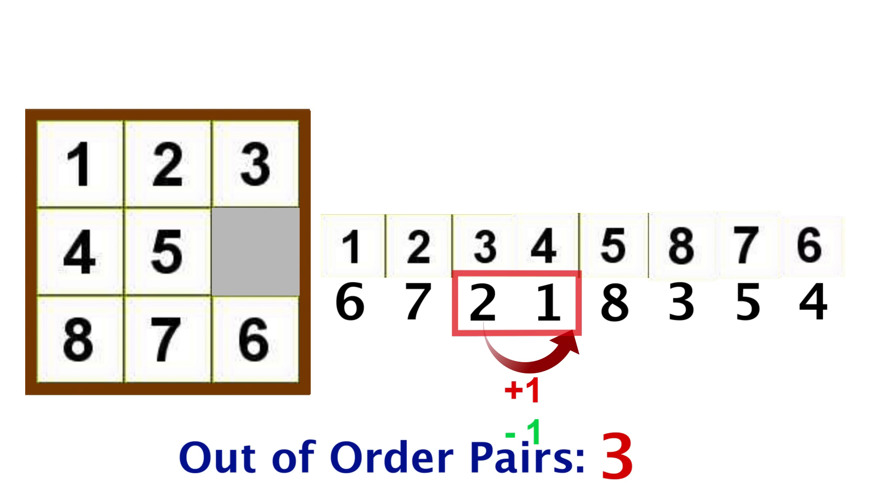If the two numbers are out of order, after a move they will be in order, thus however many out of order pairs we have will decrease by 1. And if they are initially in order, after the move they will be out of order, thus an increase in 1. Each single move makes the out of order pairs either increase or decrease by 1.